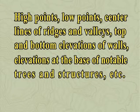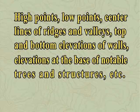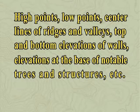Key features captured include high points, low points, center lines of ridges and valleys, top and bottom elevations of walls, elevations at the base of notable trees and structures, etc. Often each such point is identified by a unique label. These spot elevations represent the basic data structure from which most other terrain data is constructed.